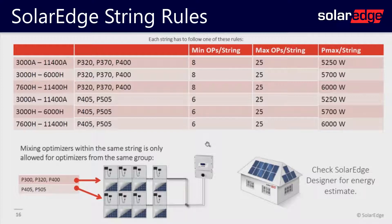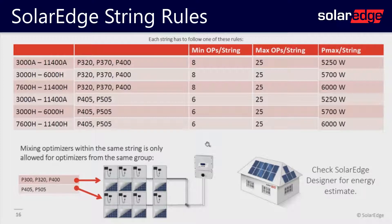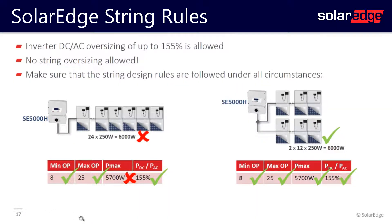The SolarEdge design rules are pretty simple. The minimum string length is eight optimizers if you're using a P320, P370, or P400. The maximum power per string changes based on the inverter you're using. Notice how the P320, P370, and P400 are in the same group, and the P405 and P505 are in a different group — based on their output voltage. You can mix and match 405s and 505s in the same string, as well as 320s, 370s, and 400s, but you cannot put a P405 in the same string as a P400.